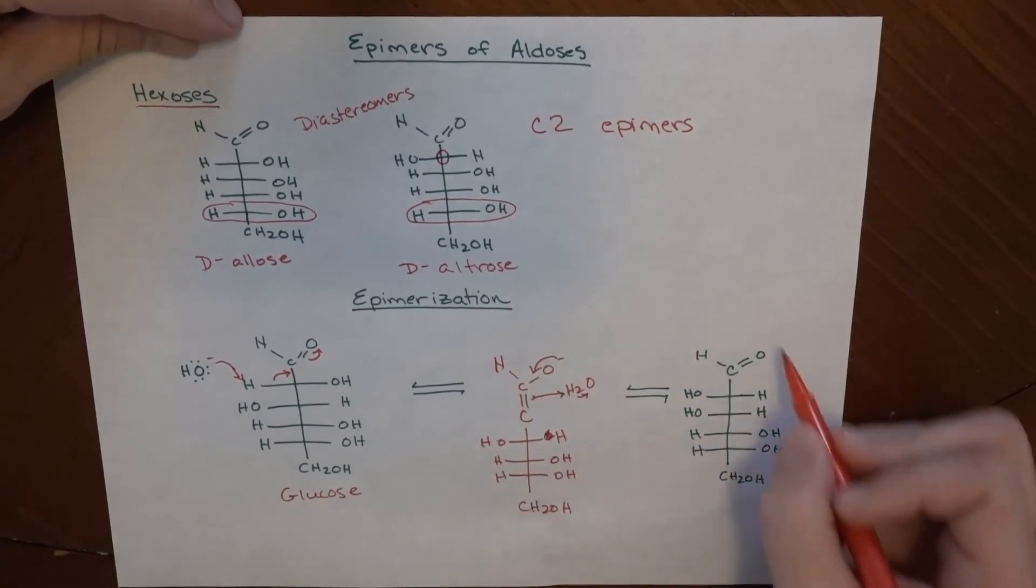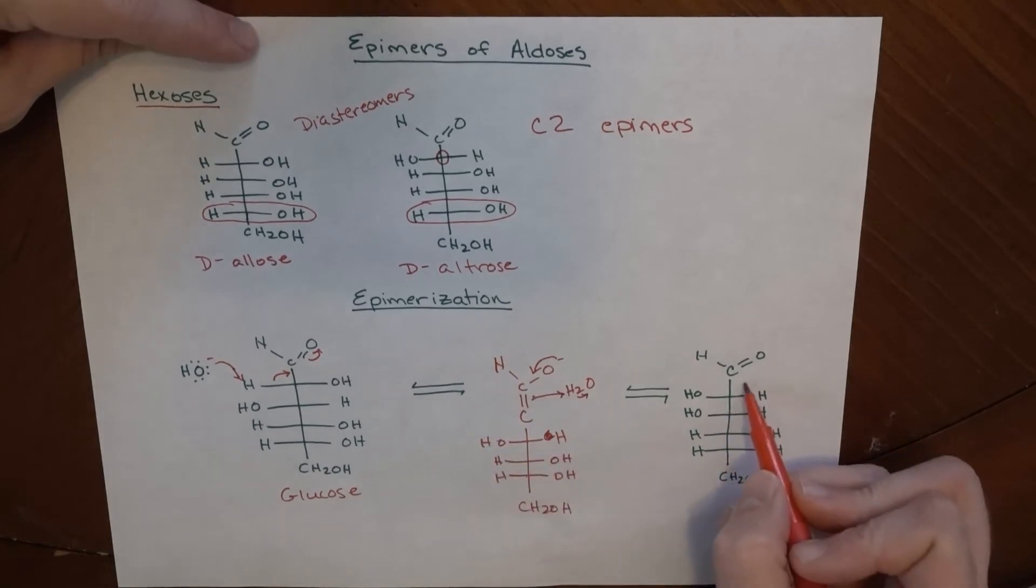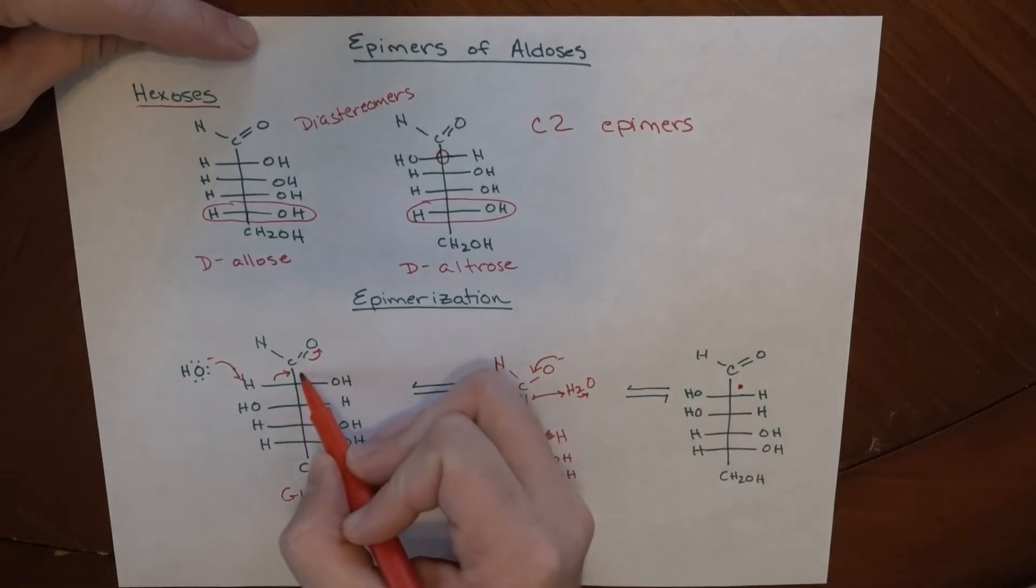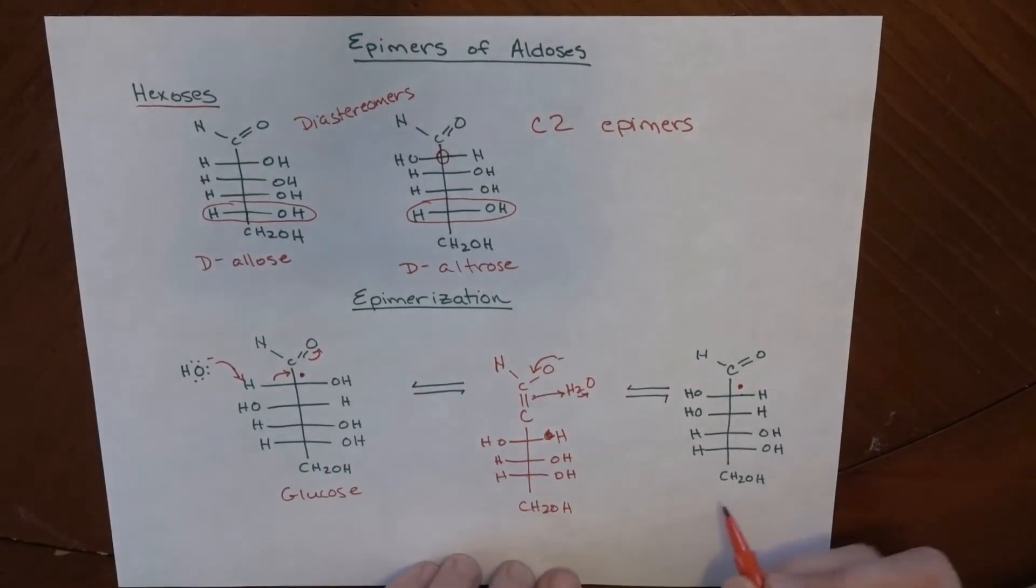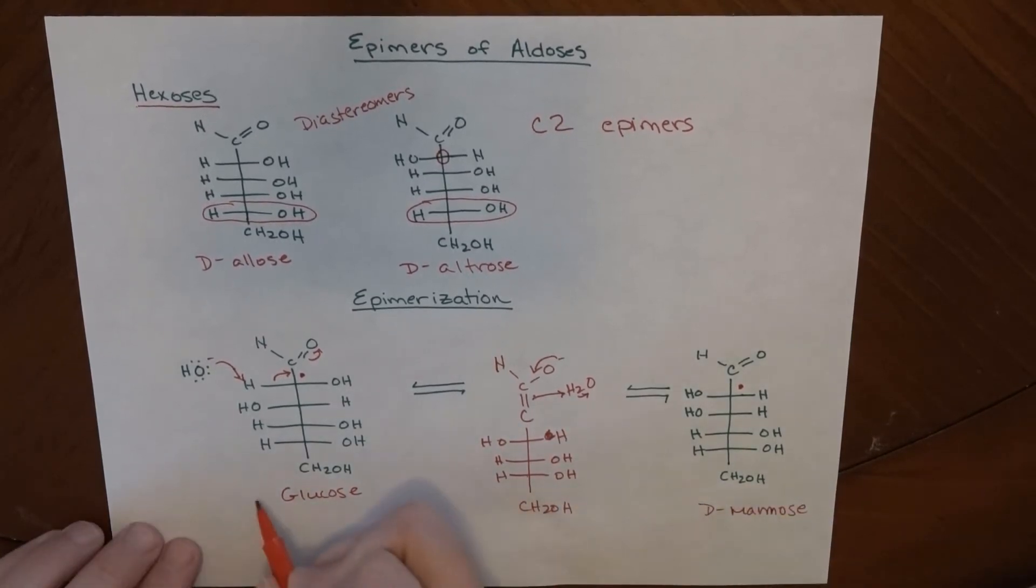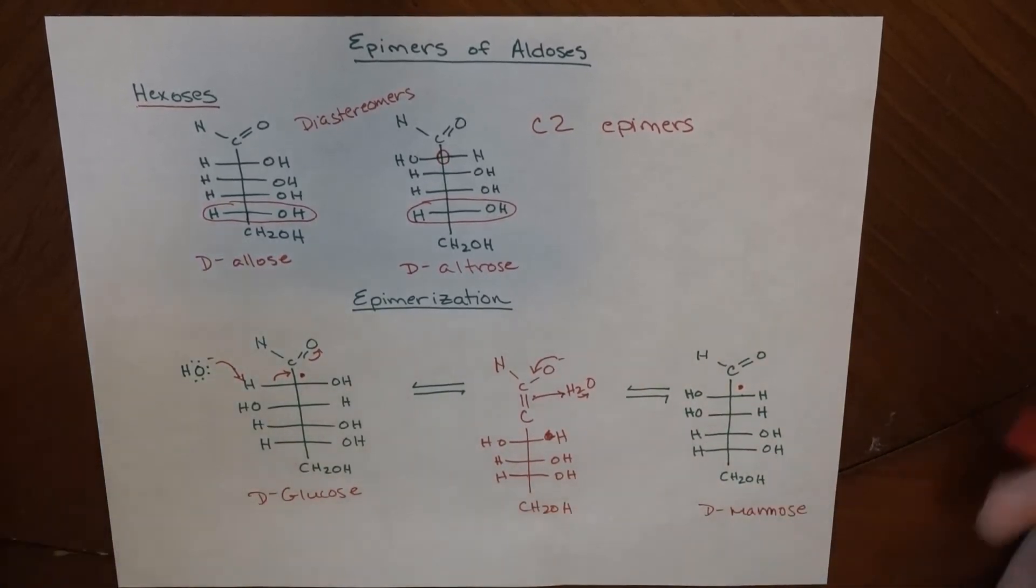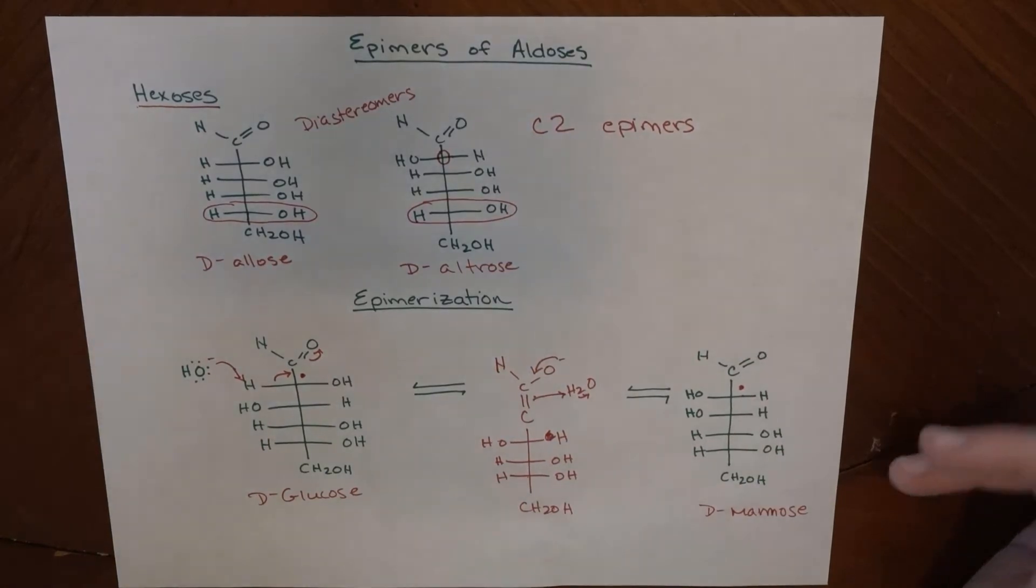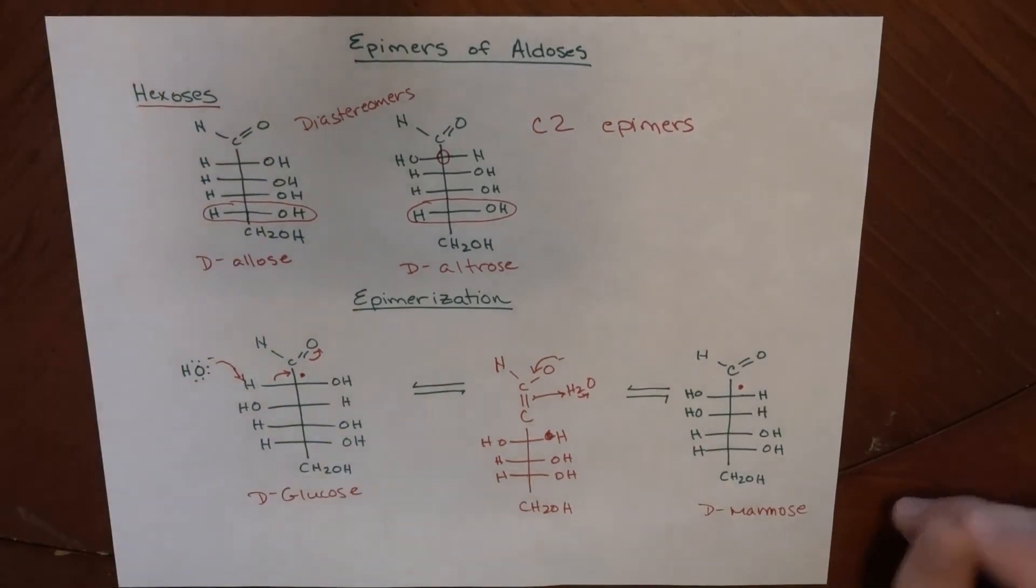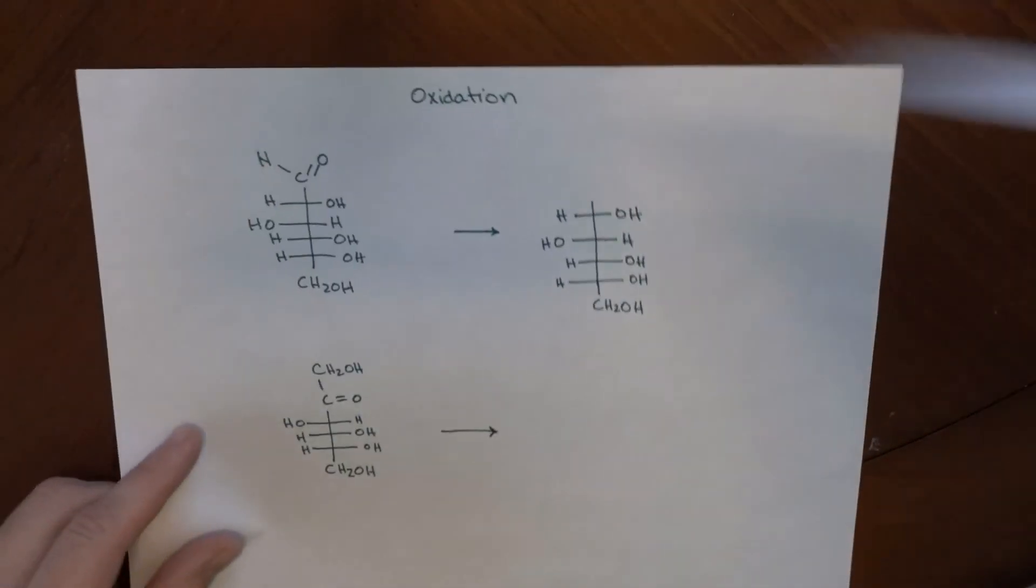And it can go back into equilibrium with this, where the H and the OH are effectively switched. If you take a look here and you take a look here, the H and the OH are on different sides, which makes them different substances. So this is D-mannose, this is D-glucose. These two things can end up switching sides, and that's how we end up through an epimerization reaction.